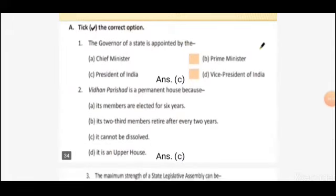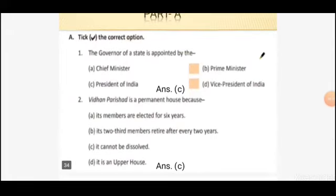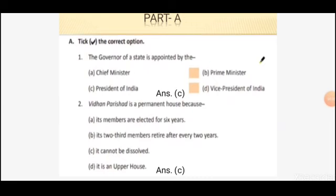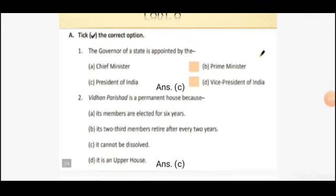First question: tick the correct option. The governor of a state is appointed by whom? Option A: Chief Minister. Option B: Prime Minister. Option C: President of India. Option D: Vice President of India. The right answer is Option C, President of India.